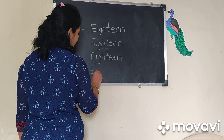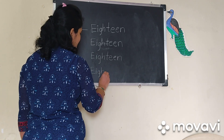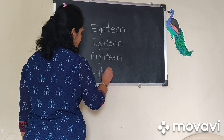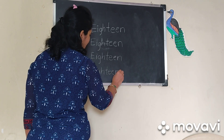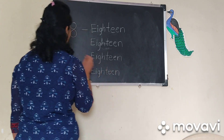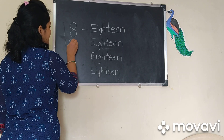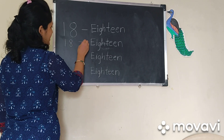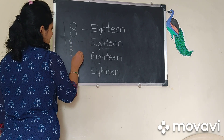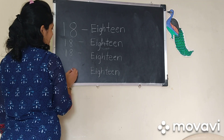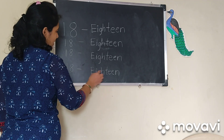Now: E, I, G, H, D, E, E, N. 18. 1, 8, E, N. 18. 1, 8, E, N. 18. 1, 8, E, N.